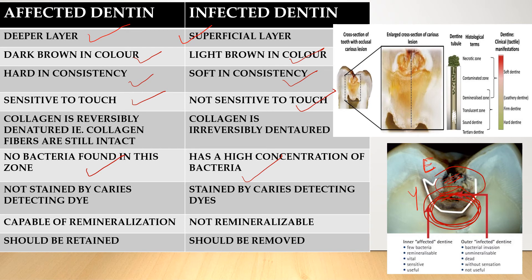The next difference: affected dentine is not stained by caries-detecting dyes, whereas infected dentine is stained by those dyes. We will cover the various dyes in the video on caries diagnosis. The key point: affected dentine is not stained and infected dentine is stained. Finally, affected dentine is capable of remineralization, whereas infected dentine is not remineralizable — which is another reason you must remove infected dentine properly.